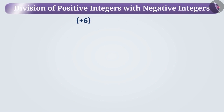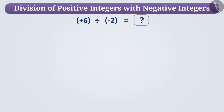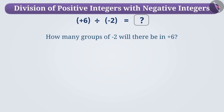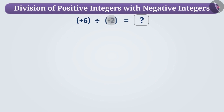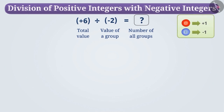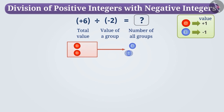Now let's find out when a positive integer is divided by a negative integer, whether the quotient is positive or negative. Suppose we have to find the quotient of plus 6 divided by minus 2. Here we have to find out how many groups of minus 2 will be there in plus 6, or if there is a group of minus 2, then how many such groups will have a value of plus 6. To get the value of plus 6, we first take two zero pairs. If we remove two blue buttons from these two zero pairs, we get two red buttons. In this way, we get the total value plus 2 by subtracting the value of minus 2 from the zero pair.